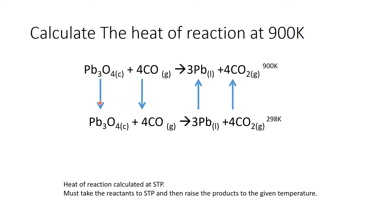We pay attention to the arrows. This arrow is going from hot to cold, so that means this is going to have a negative sign associated with it. And this is going to have a positive sign associated with it, because you're going to be using sensible heats for this part.